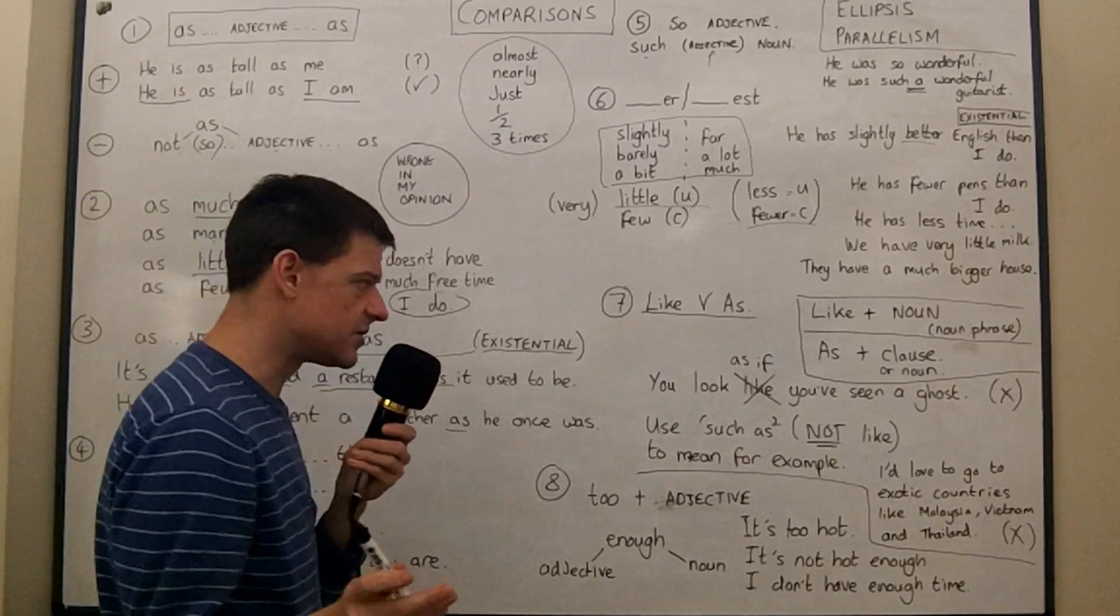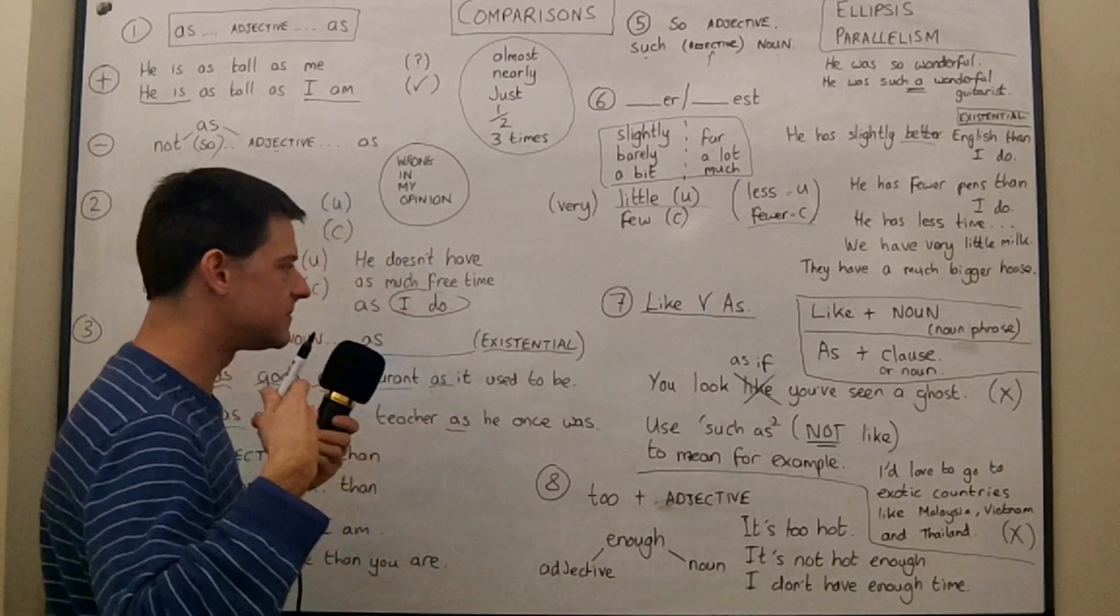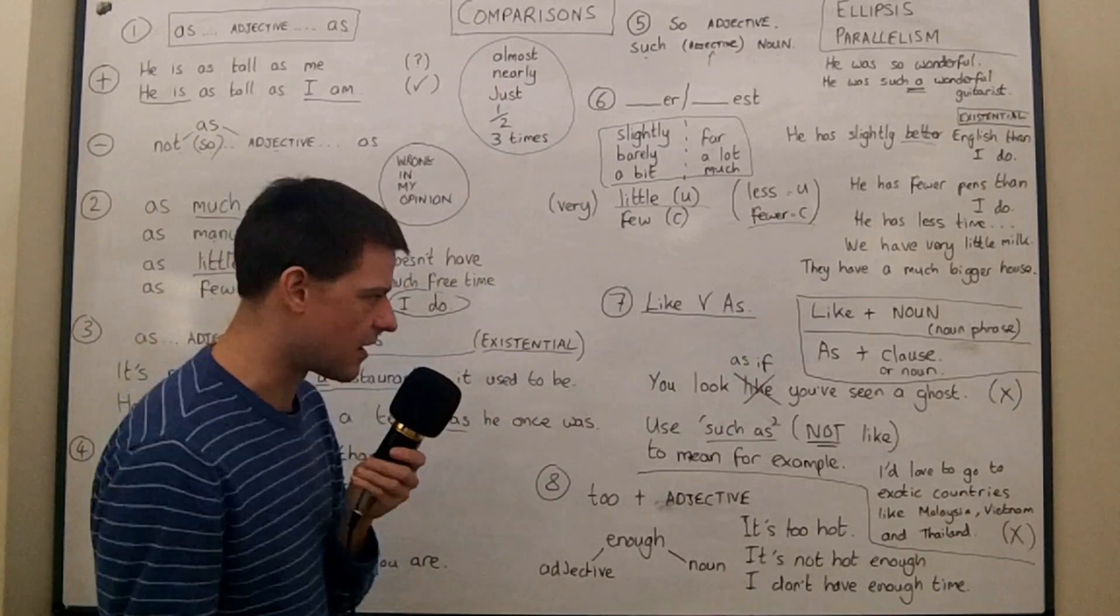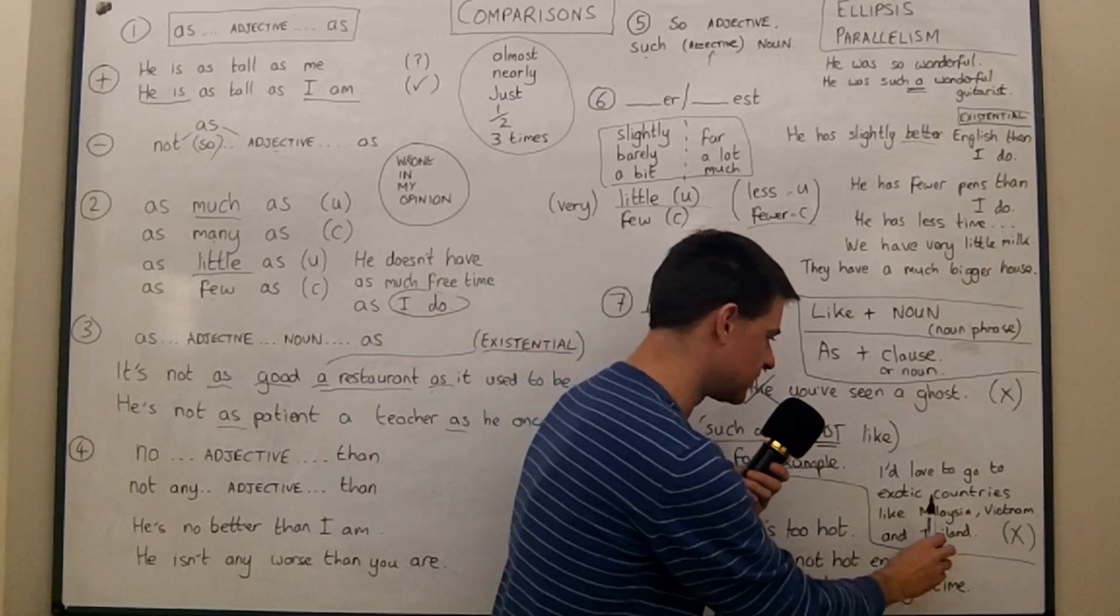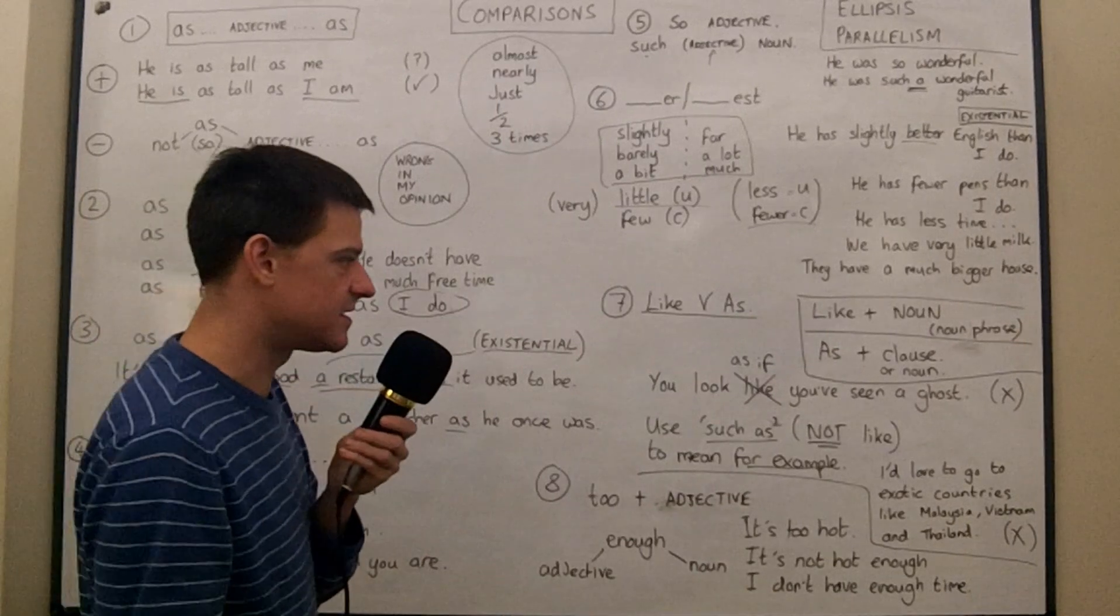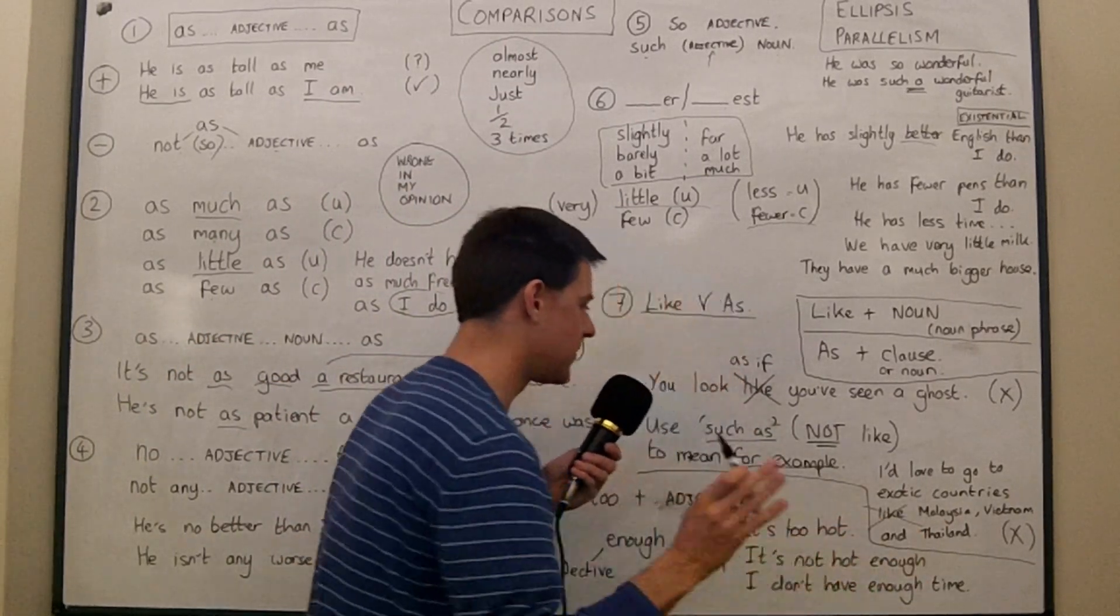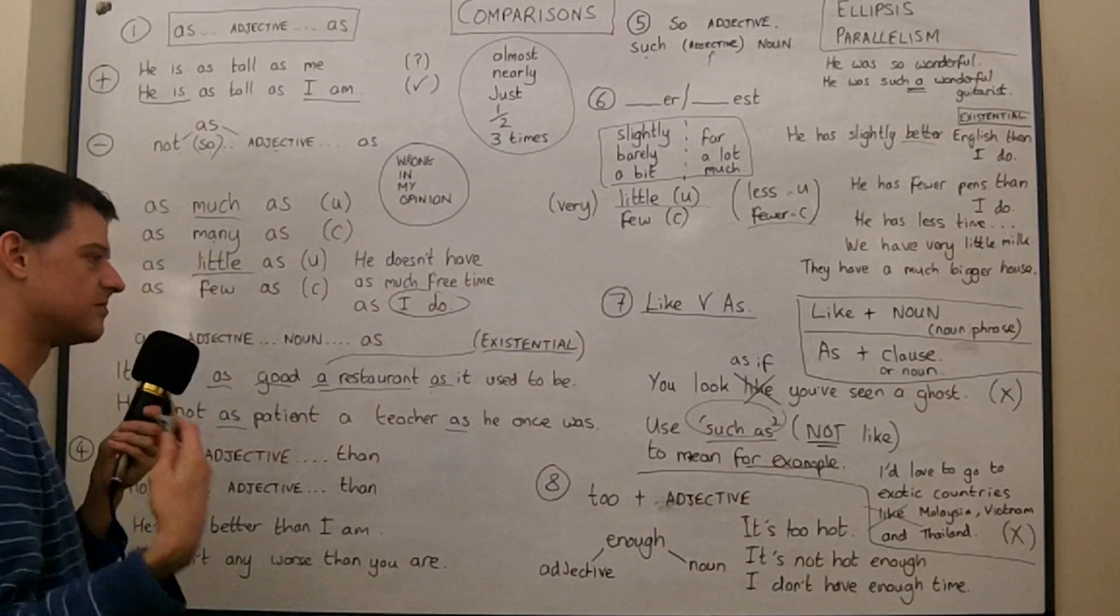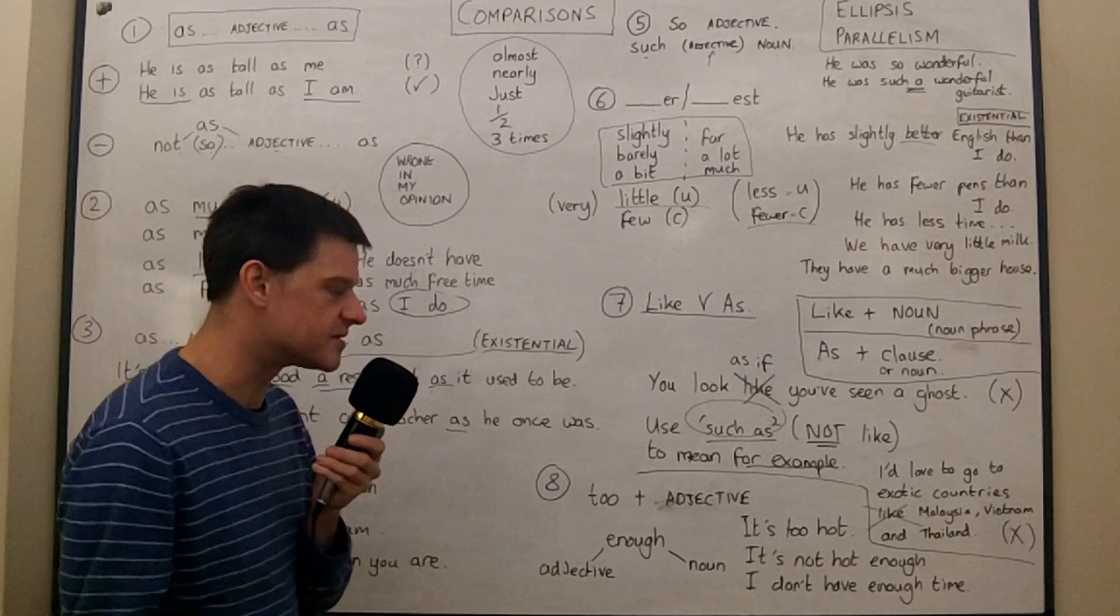I also read, and it was on the Bristol University website, something that I haven't seen before, but which sounded correct to me. If you're giving a list in a piece of formal writing, it sounds much better to use such as and not like. To mean, for example. Okay. So look at this sentence. I'd love to go to exotic countries like Malaysia, Vietnam and Thailand. Now, in everyday speech, that's fine. That really is fine. But in formal writing, that's probably not the best option. You should probably take away like, cross out like, and add such as instead. I'd love to go to exotic countries such as Malaysia, Vietnam and Thailand. But I think like is fine in an informal kind of email to a friend, something like that.